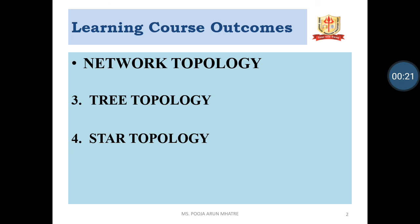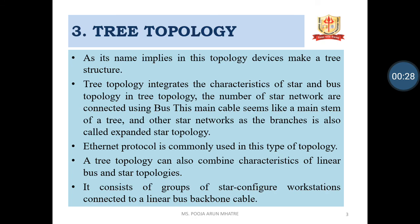The learning course outcomes are Network Topology, Tree Topology and Star Topology. As its name implies, in tree topology devices make a tree structure. The tree topology integrates the characteristics of star and bus topology. The number of star networks are connected using the bus. This main cable stream seems like a main stream of a tree and other star networks as branches. It is also called an expanded star topology.